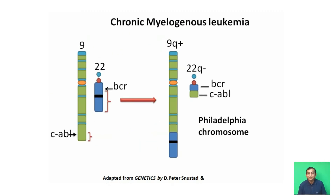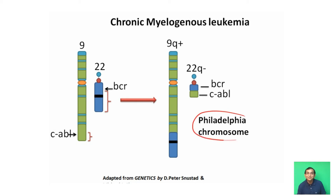Some cancers are developed by chromosomal rearrangement. One important example is chronic myelogenous leukemia, or CML, which develops due to reciprocal translocation between chromosome number 9 and chromosome 22. As a result of this translocation, a new chromosome develops called the Philadelphia chromosome, first discovered in Philadelphia, USA.